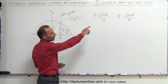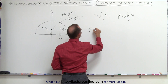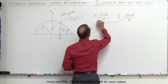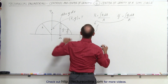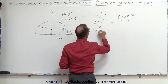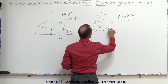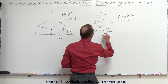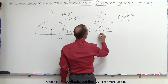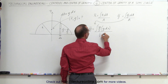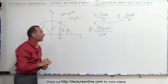We can go ahead and plug that into our equation. So we get the y-coordinate of the center of gravity is equal to the integral of the center of gravity of the small segment, which is y divided by 2, times dA, which is y times dx. We have to take the whole thing and divide it by the area of a semicircle. The area of a semicircle is equal to one-half pi r squared — pi r squared is the full circle area, so we take half of that.